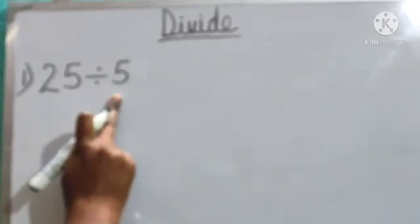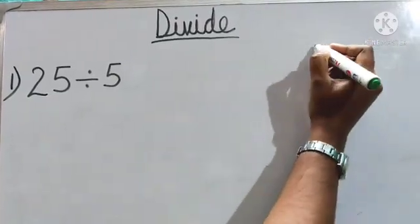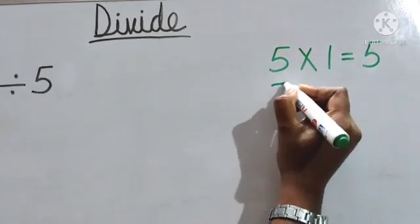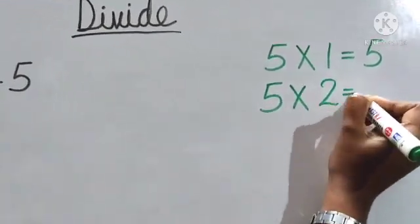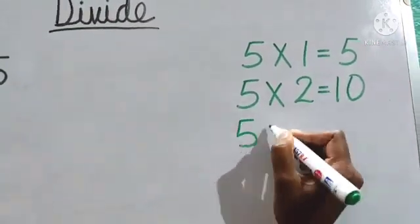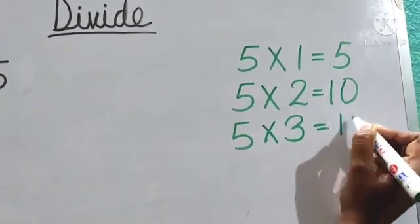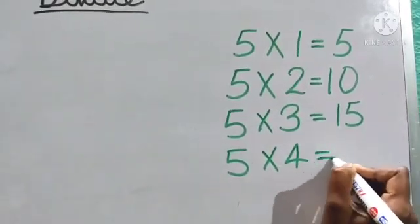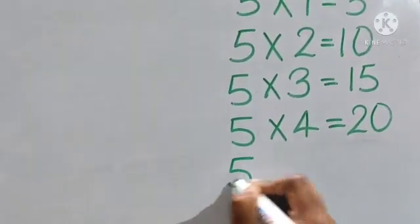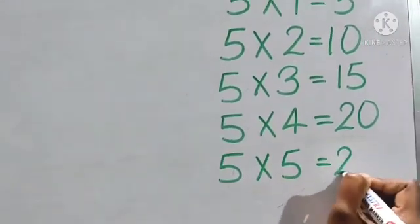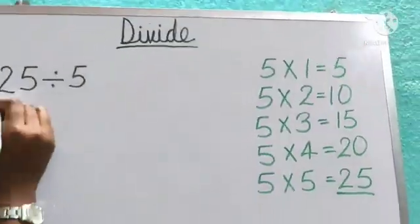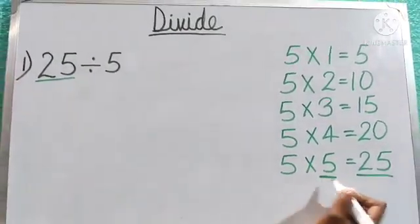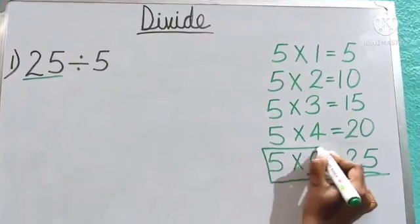We know the 5 times table, so I am going to write the table of 5. 5 times 1 is 5. 5 times 2 is 10. 5 times 3 is 15. 5 times 4 is 20. 5 times 5 — we get 25. And here we also have 25.